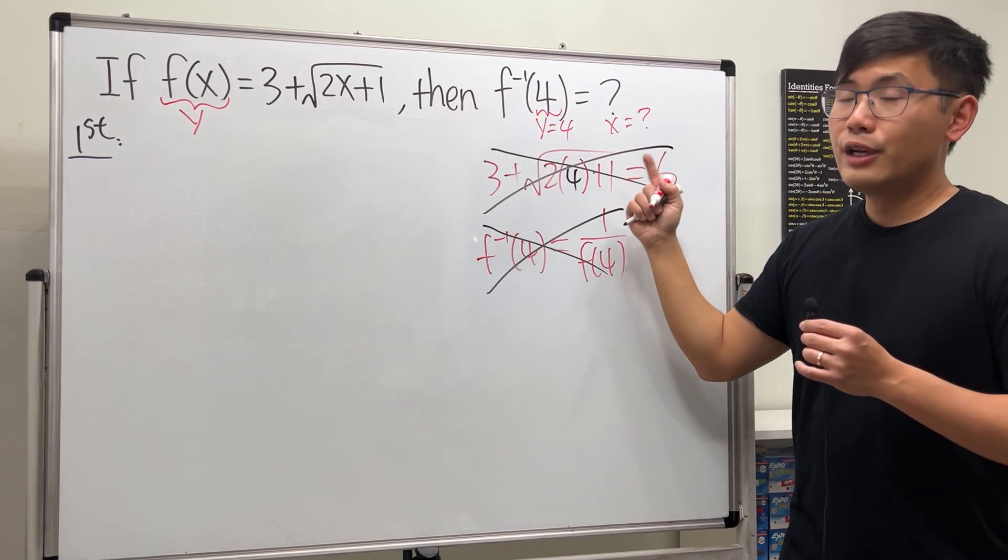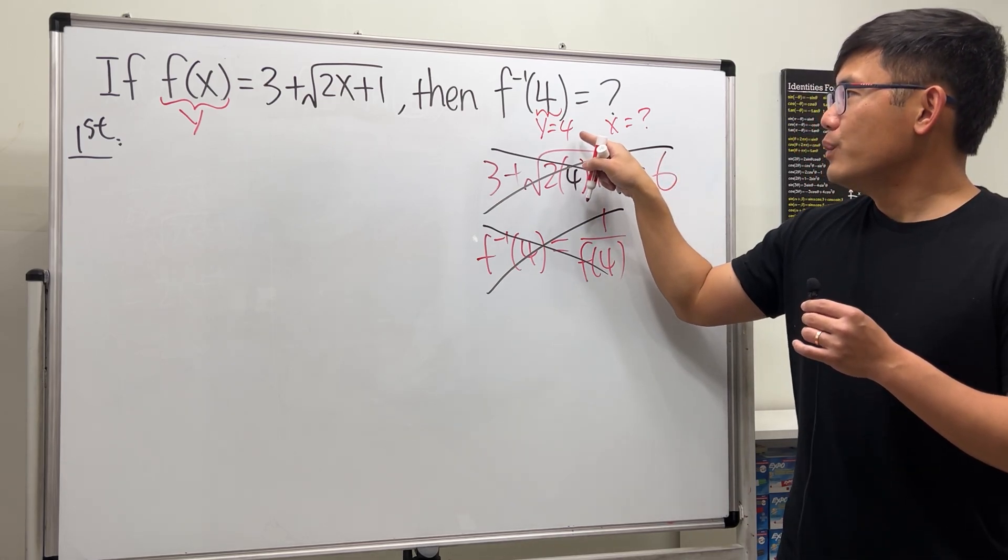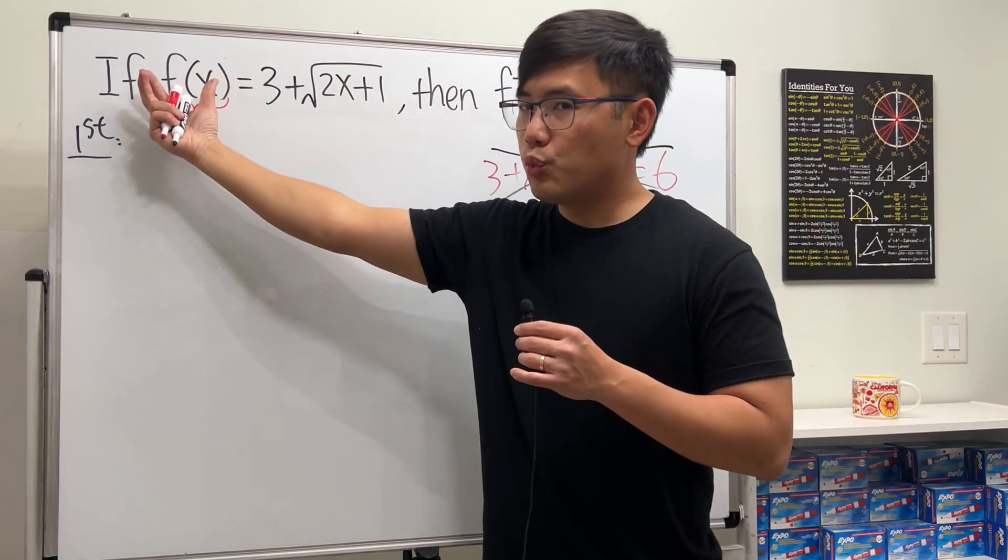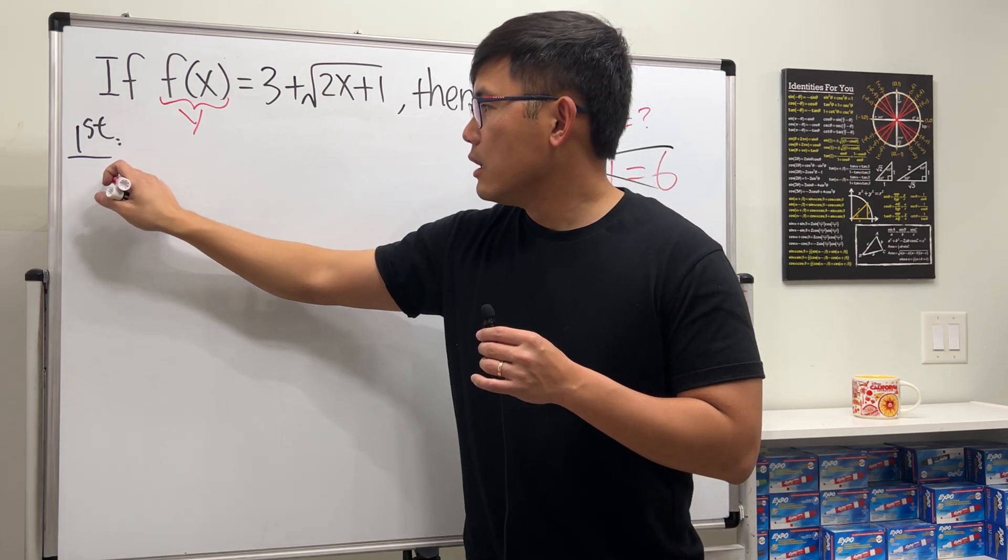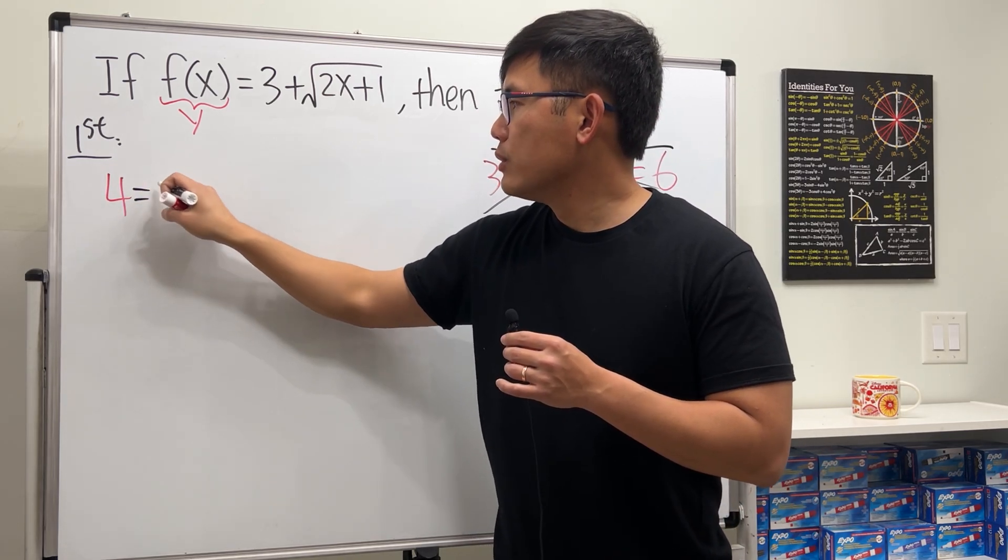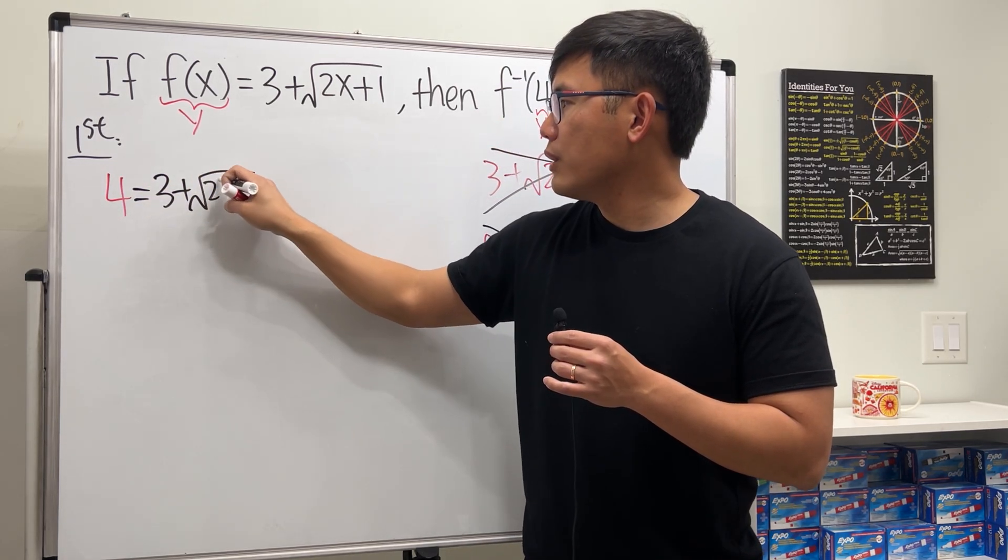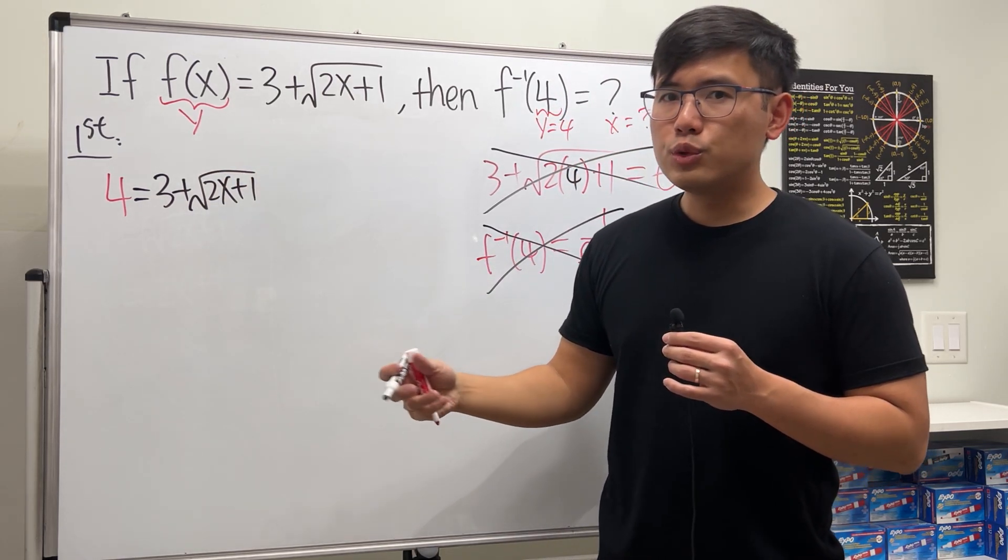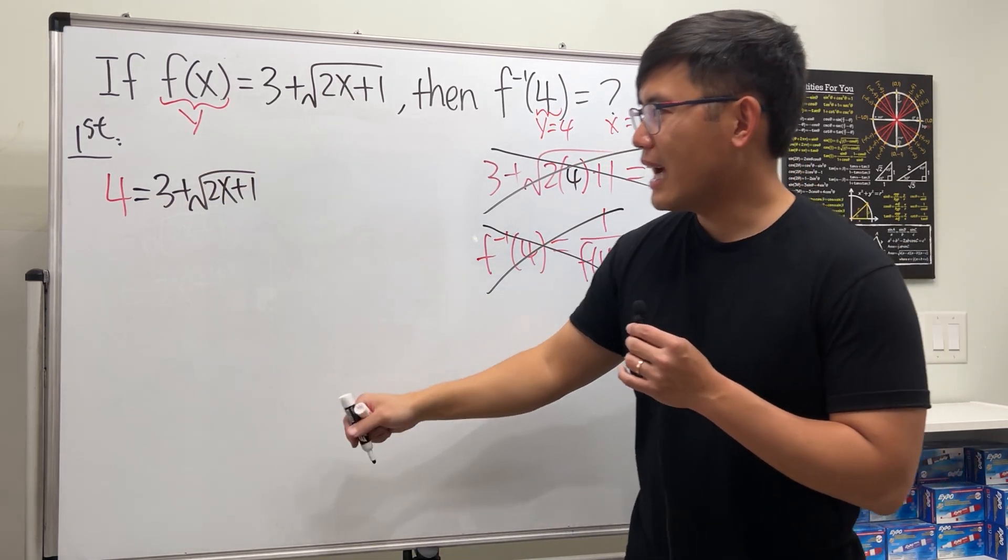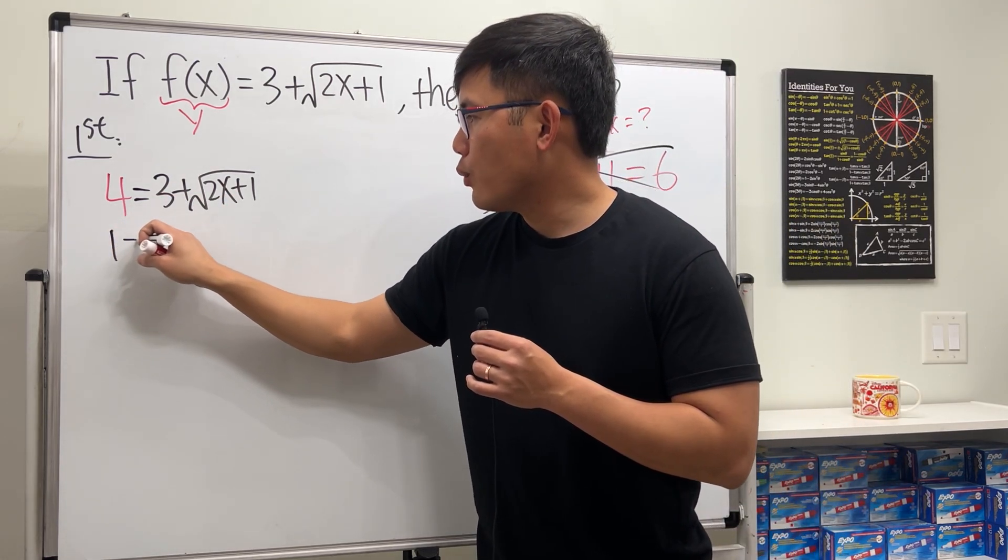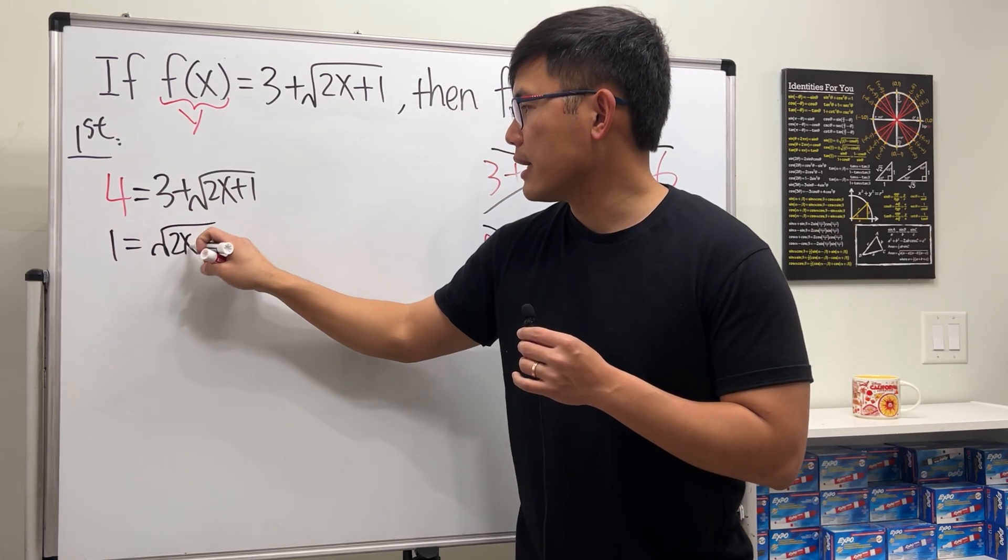And we don't know what x is, so with this idea in mind we can put a 4 into this y right here and say 4 is equal to 3 plus the square root of 2x plus 1, and we just have to solve for x from here. Let's make that happen. Minus 3 on both sides, we get 1 is equal to the square root of 2x plus 1.